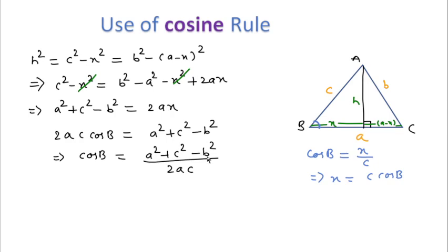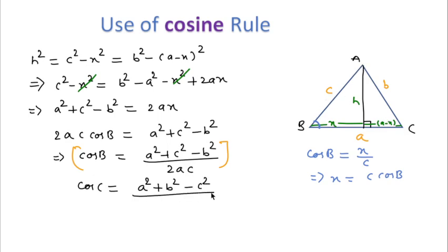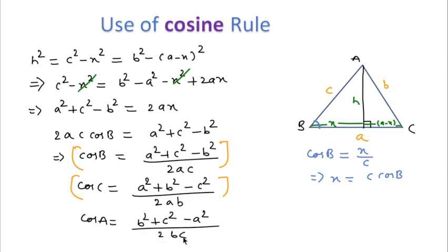Therefore, cos B = (a² + c² − b²) / 2ac. Similarly, cos C = (a² + b² − c²) / 2ab, where we subtract the square of the side opposite to angle C. And cos A = (b² + c² − a²) / 2bc. These are the required cosine rule formulas, used to find side lengths of triangles or chord lengths in circles.